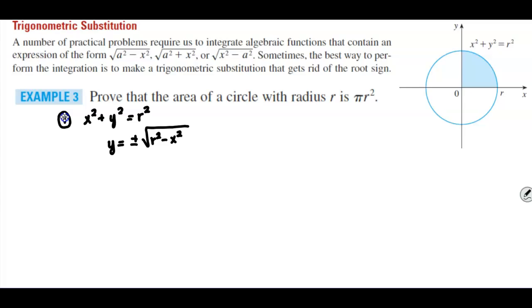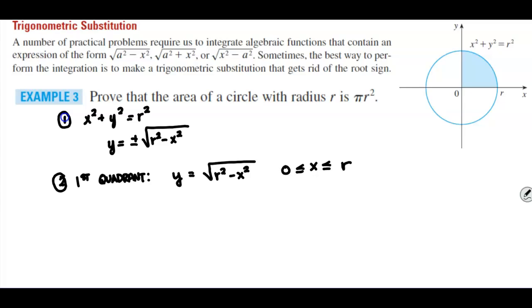The part of the circle in the first quadrant is given by y equals the square root of r² minus x², where the domain means x is between 0 and r. So one-fourth of the area means we need to integrate from 0 to r the square root of r² minus x² dx.